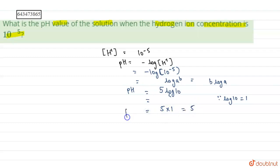So pH for the given solution with the concentration of H+ ion being 10 to the power minus 5, we get pH is 5. Our answer is pH equals 5.